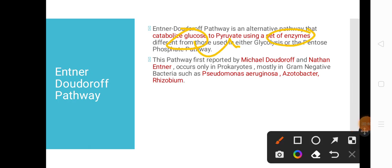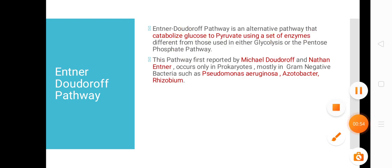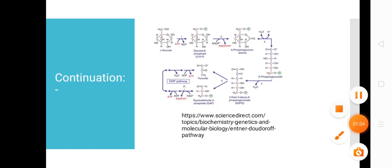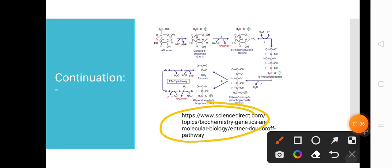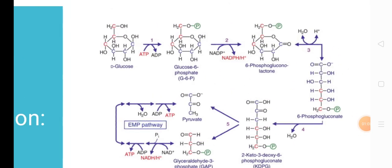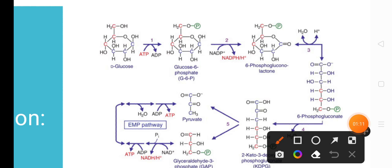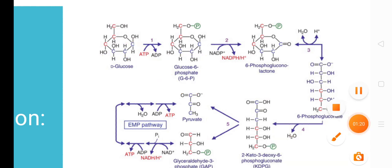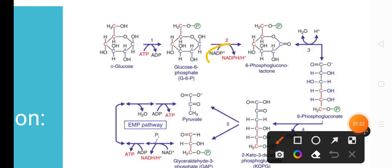In this pathway, glucose is converted into pyruvate using a set of enzymes that are different from glycolysis and the pentose phosphate pathway, both of which we have discussed earlier. We will learn this with the help of a diagram. First, glucose is converted into glucose-6-phosphate in the presence of ATP — this step is the same as the first step of glycolysis.